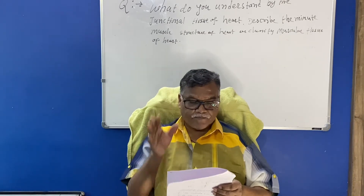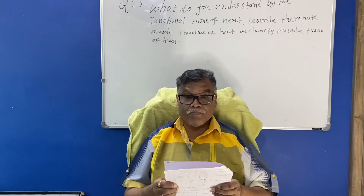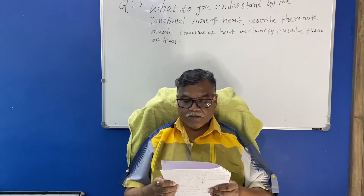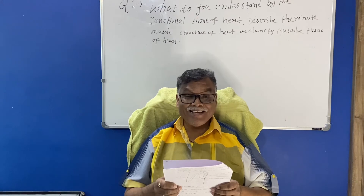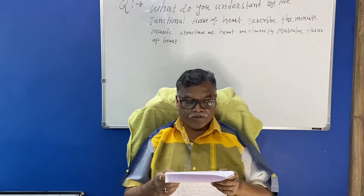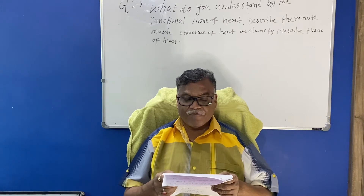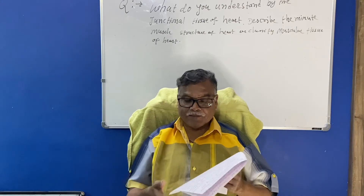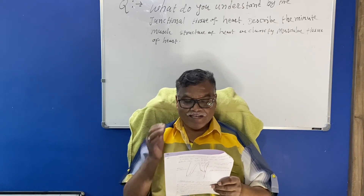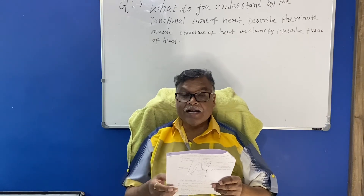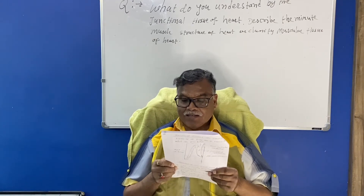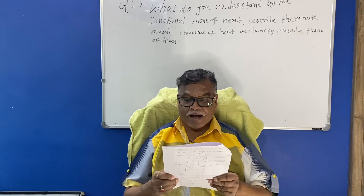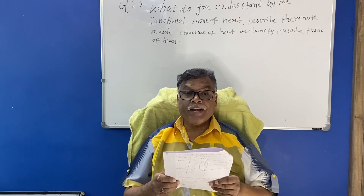There is no definite cell membrane between the individual fibers, and the cementing material is bridged across by fine fibrils from cell to cell. The muscle is thus regarded as a syncytium. The diameter of a fiber is about 20 microns.